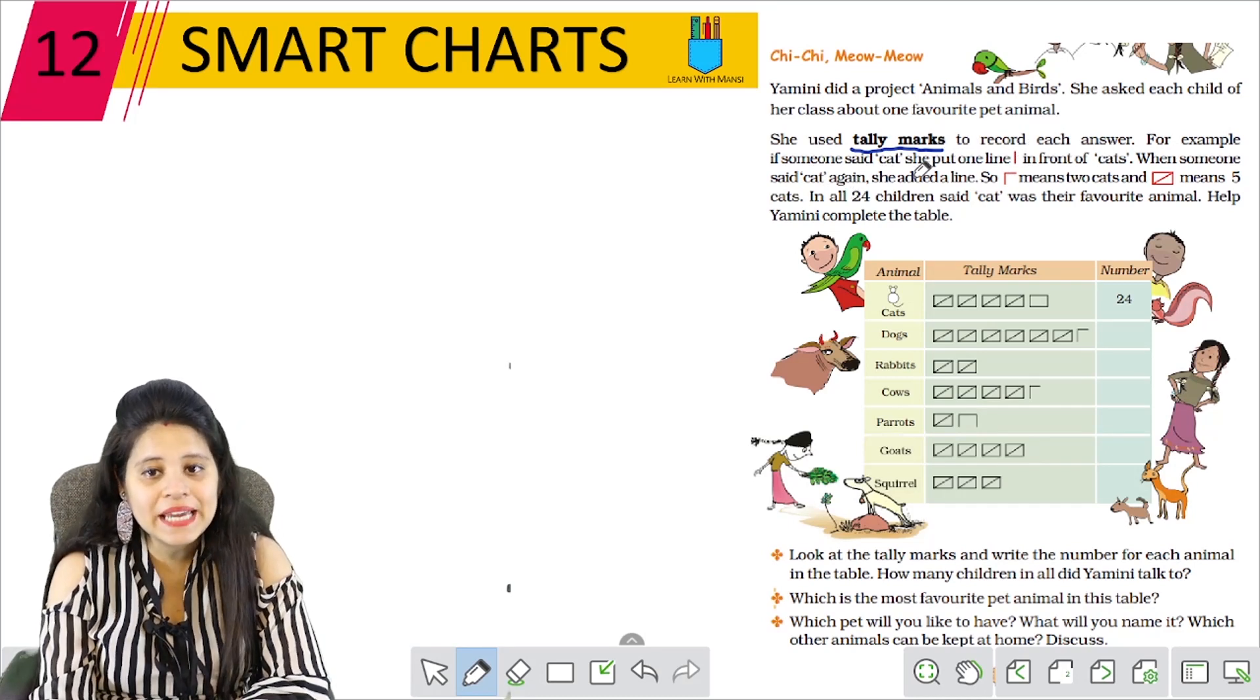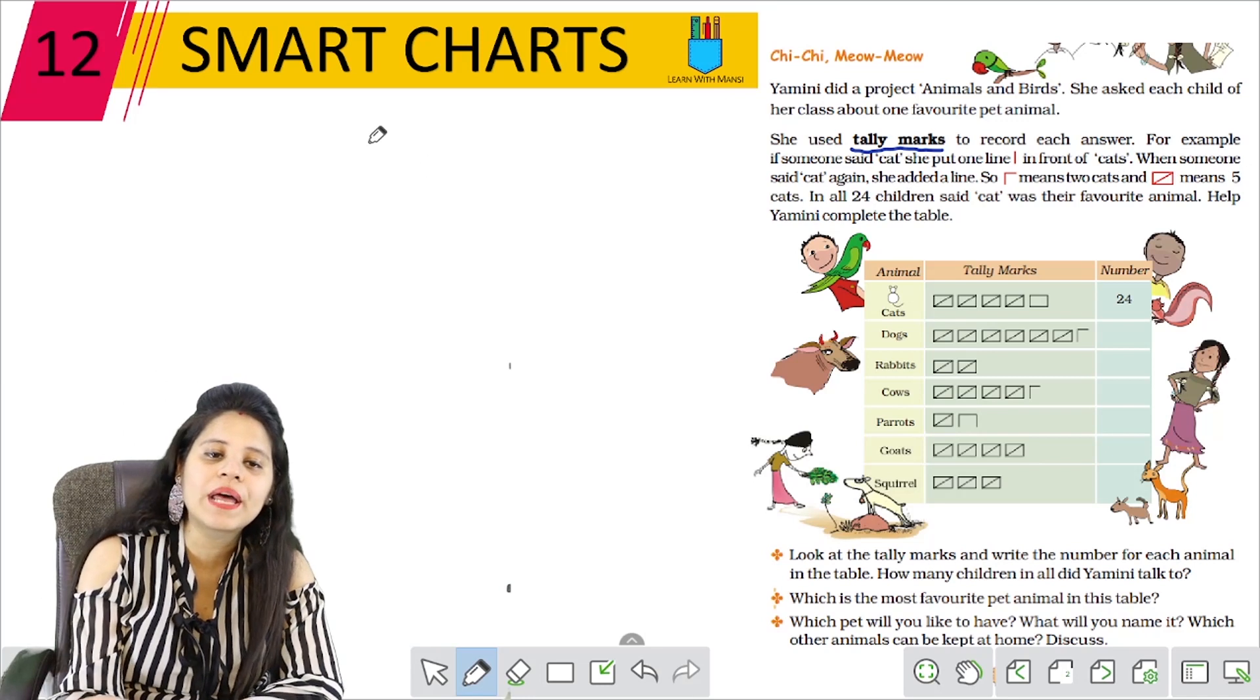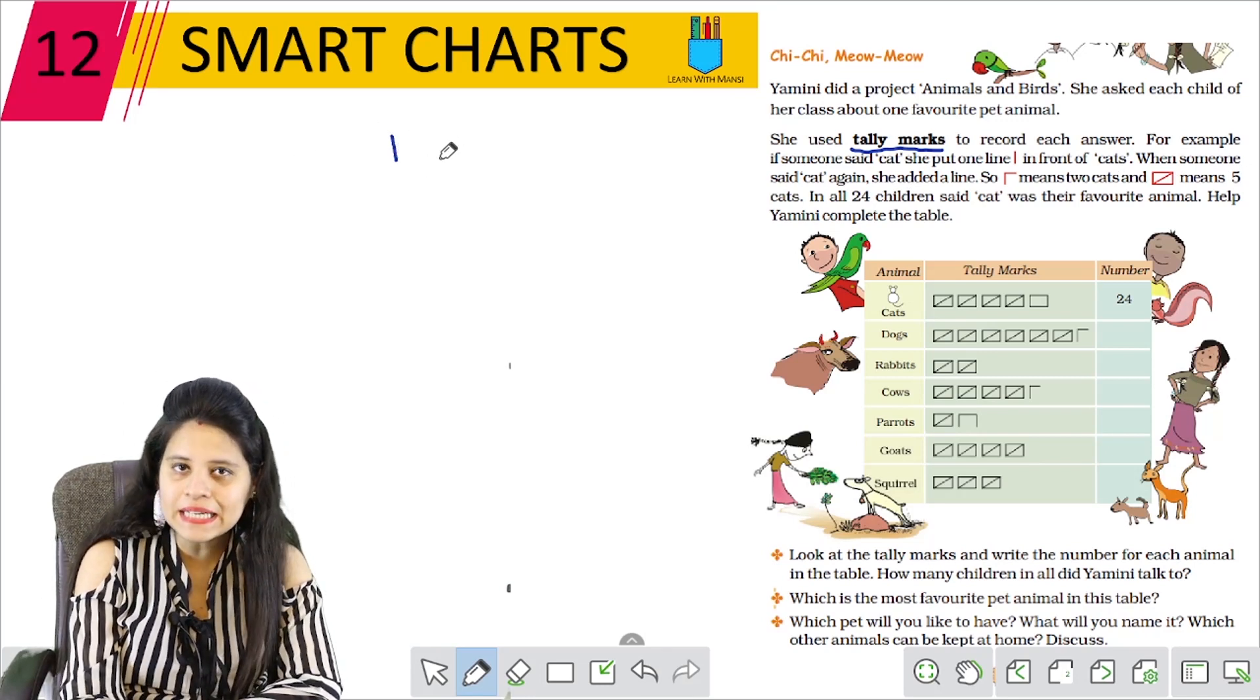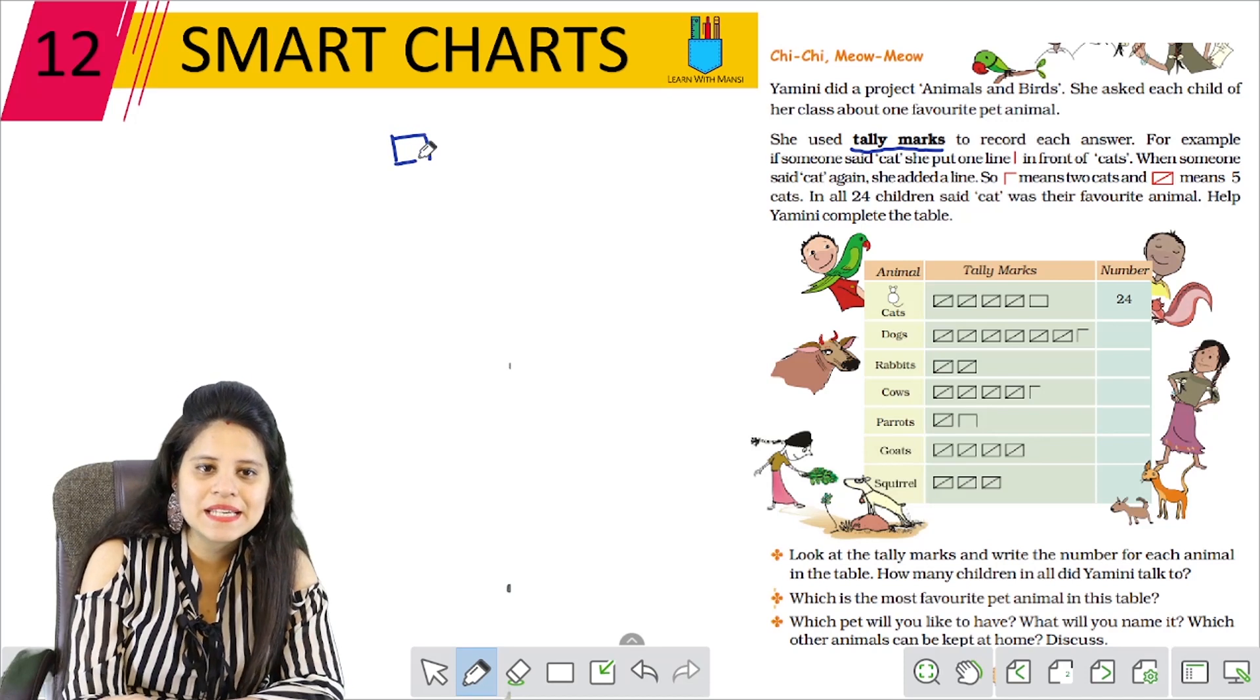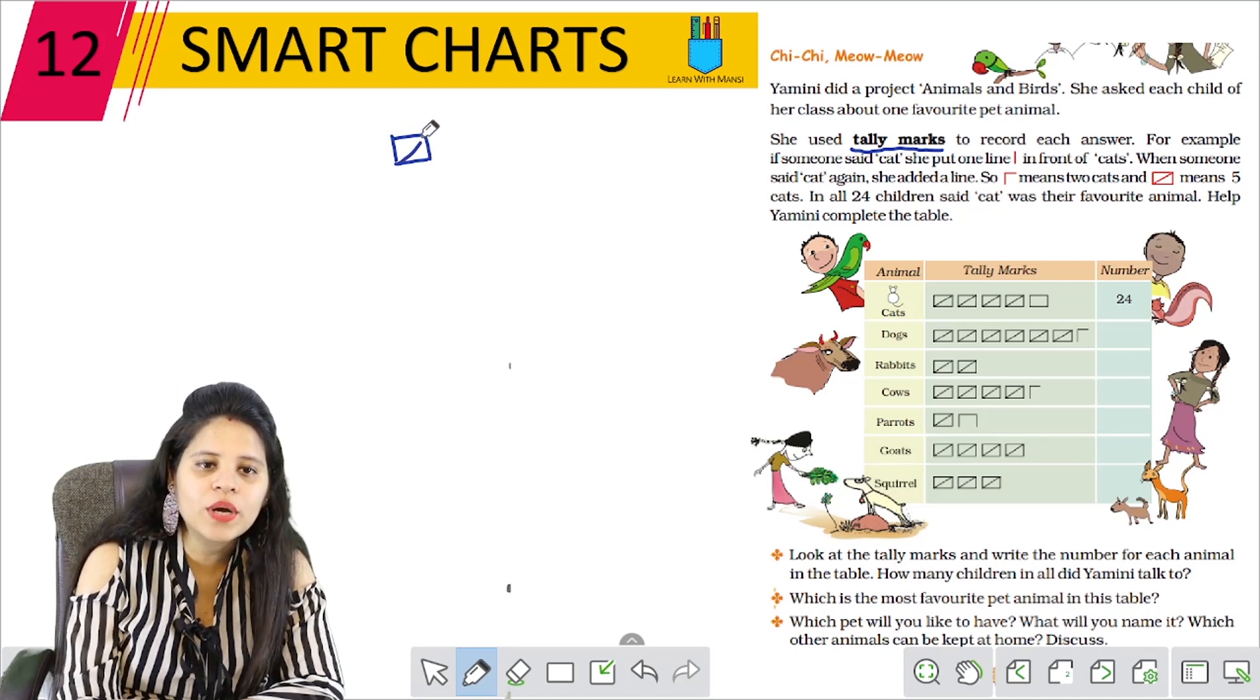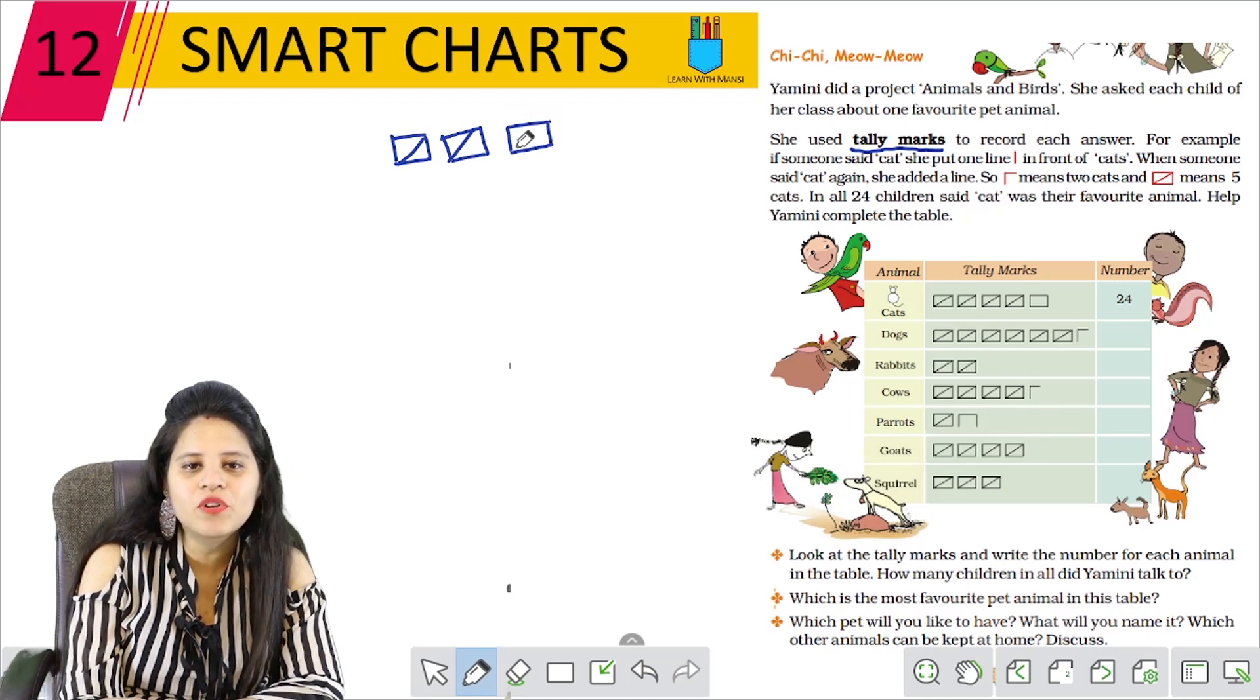When someone said cat again, she added a line. So this means two cats and this means five cats. So basically, what is happening? Like she asked her, let's suppose, that's how she wrote one question. Then if there's two cats, then it will grow this way. For three, for four. And if there's five cats, then this is the box complete. For six, then again. Then again, seven, eight, nine, ten. It's like 11, 12, 13, 14, 15. Like this.